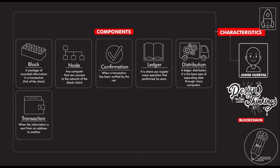A transaction is when information is sent from one address to another. Proof of work is the consensus algorithm used to confirm transactions and produce new blocks in the chain.